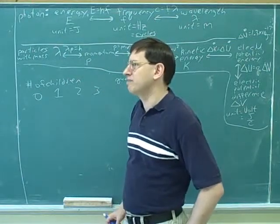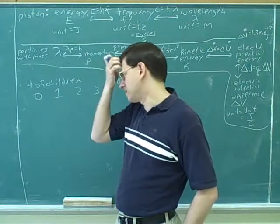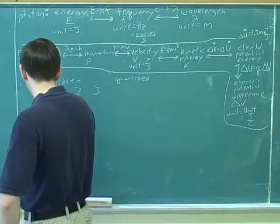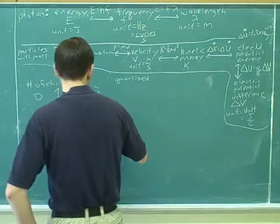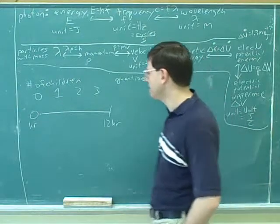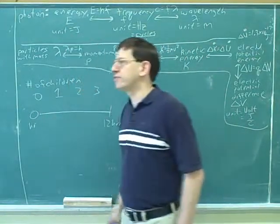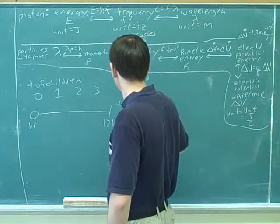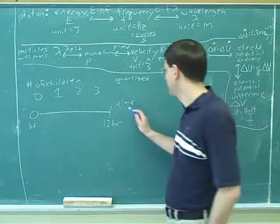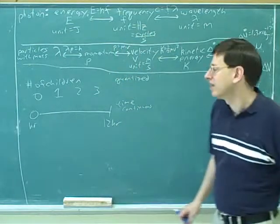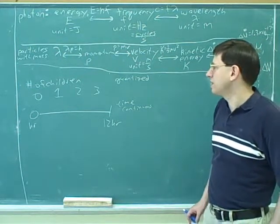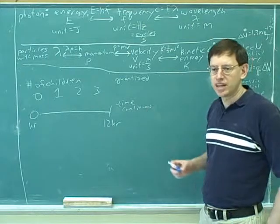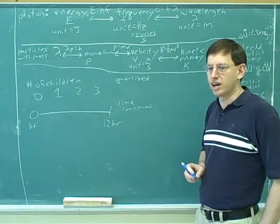Now, how about how much time I'm going to spend sleeping this evening - is that quantized or continuous? That's continuous, because it could be anywhere between zero hours and 12 hours - anywhere on the number line. I could sleep for 1.5678986 hours; I can split this up as fine as I want. The big theme of this chapter is that a lot of things that seem continuous are really quantized. Energy is a great example - in many situations, energy is quantized, meaning it can only take on certain values.